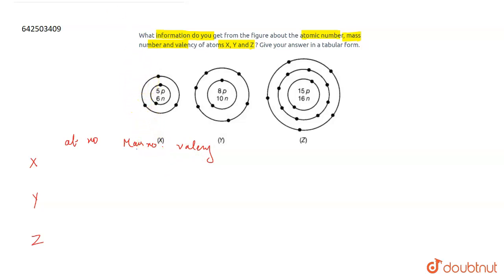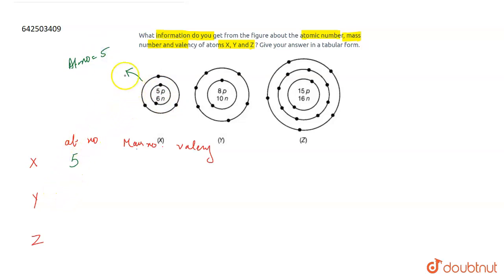Talking about the atomic number of X: if you look at X carefully, it has five protons. The atomic number is equal to the number of protons, so the atomic number for X is five. The mass number is the number of neutrons plus the number of protons, which equals 11 in this case.